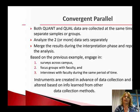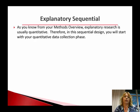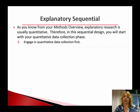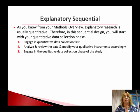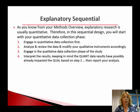Now let's talk about explanatory sequential. As you know from your methods overview document, explanatory research is typically quantitative. Therefore, in an explanatory sequential design, you will start with your quantitative data collection first. You engage in quantitative data collection — so your surveys — analyze and review that data, and then modify your qualitative instruments accordingly. Then you do the qualitative data collection phase of the study. Then you interpret the results, keeping in mind that the quantitative data results have possibly already impacted the qualitative data you engaged in second, all based on step two above. Then you report your results.